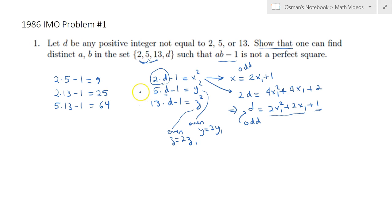So as a result, the second expression here, 5d minus 1, is equal to 4y₁ squared. In a similar way, the third expression here will become 13d minus 1 is equal to 4z₁ squared.